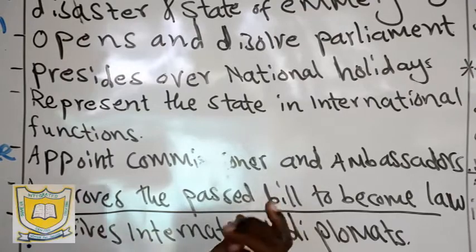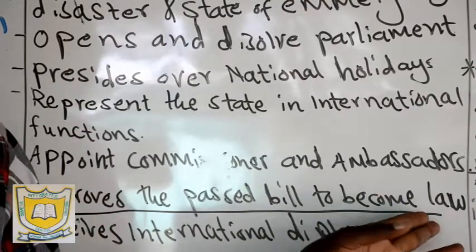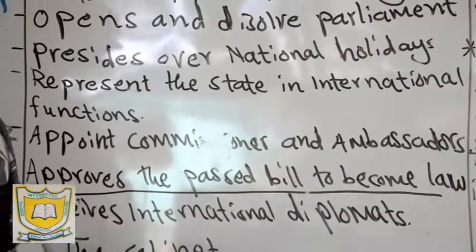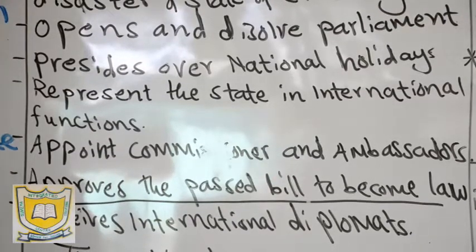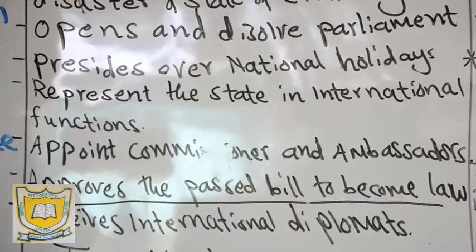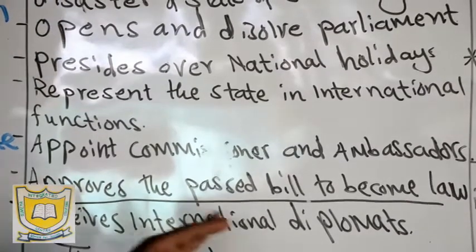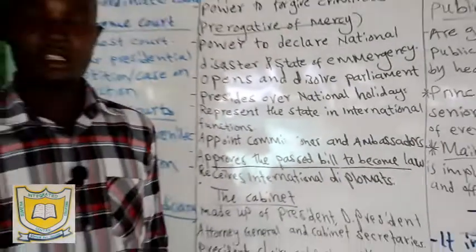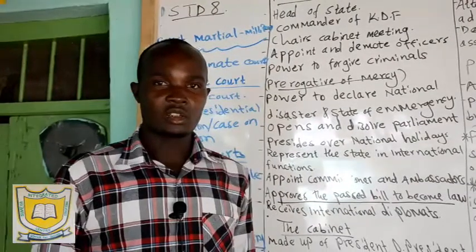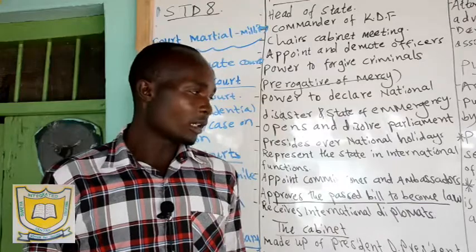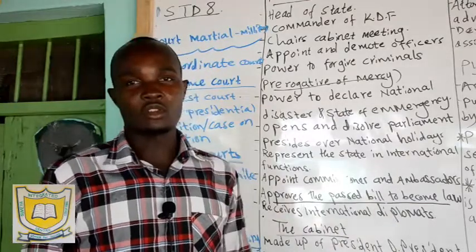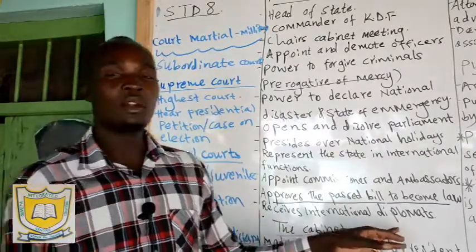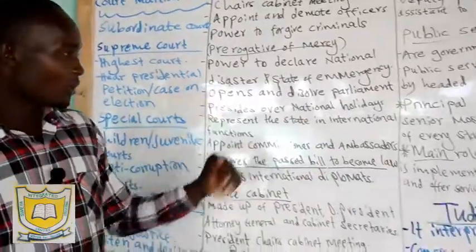When we talk about a bill, we are talking about a raw law — it is still not yet in operation. It still has to be signed by the president so as to become the law and start operating. That is called presidential assent — he signs the bills passed by the parliament to make them law. Then he receives international diplomats — those people from other countries who have come in a peaceful way. Maybe a head of state from Ethiopia, Nigeria, or other countries. When they come, the president is the one to receive them as head of state.